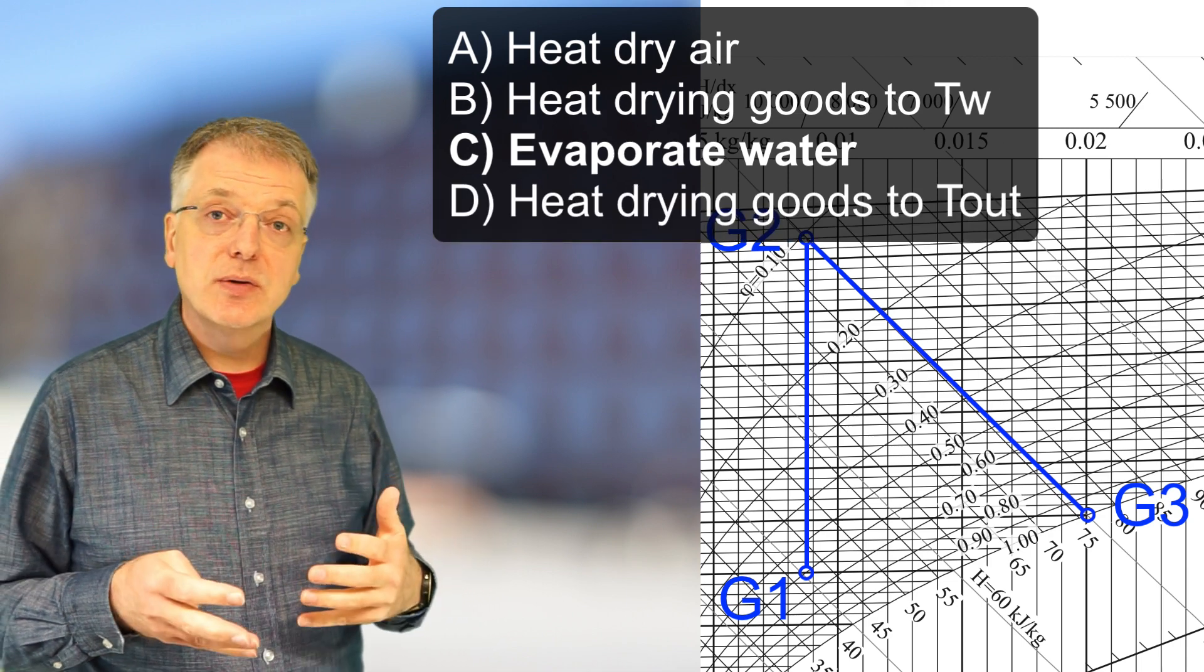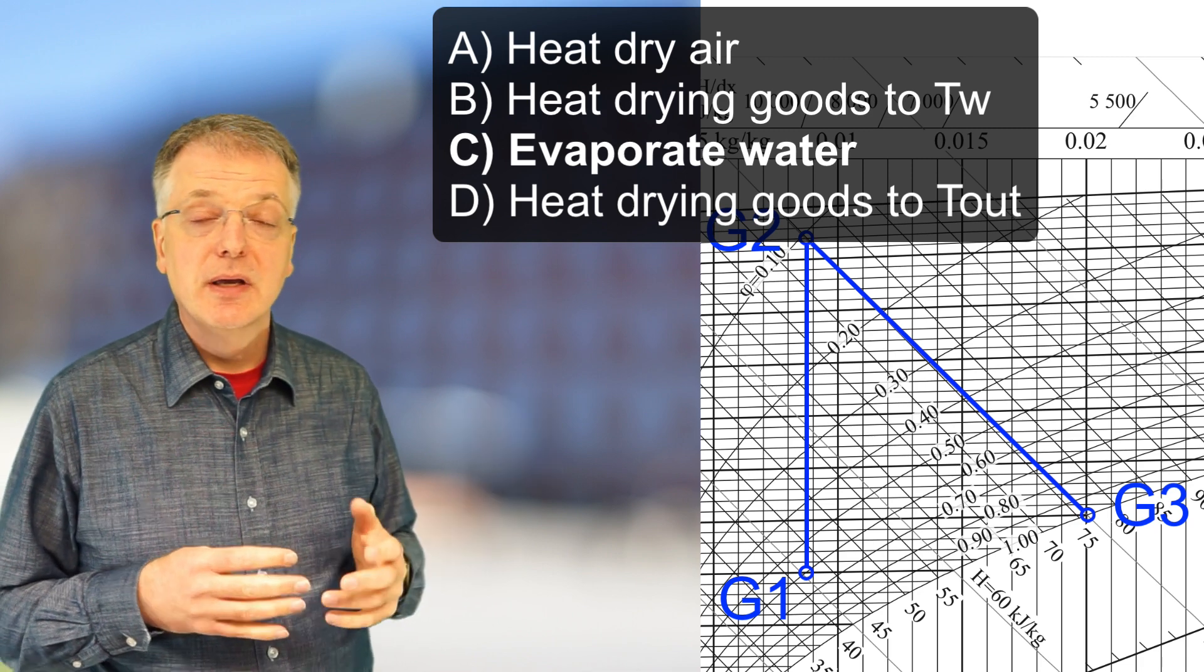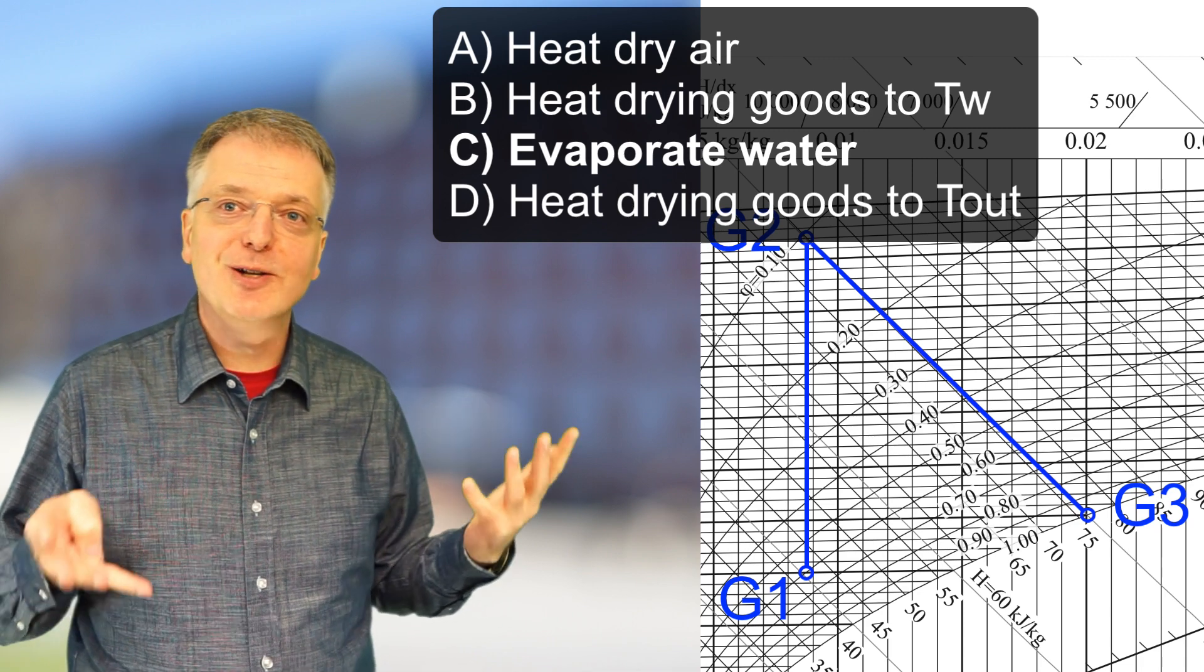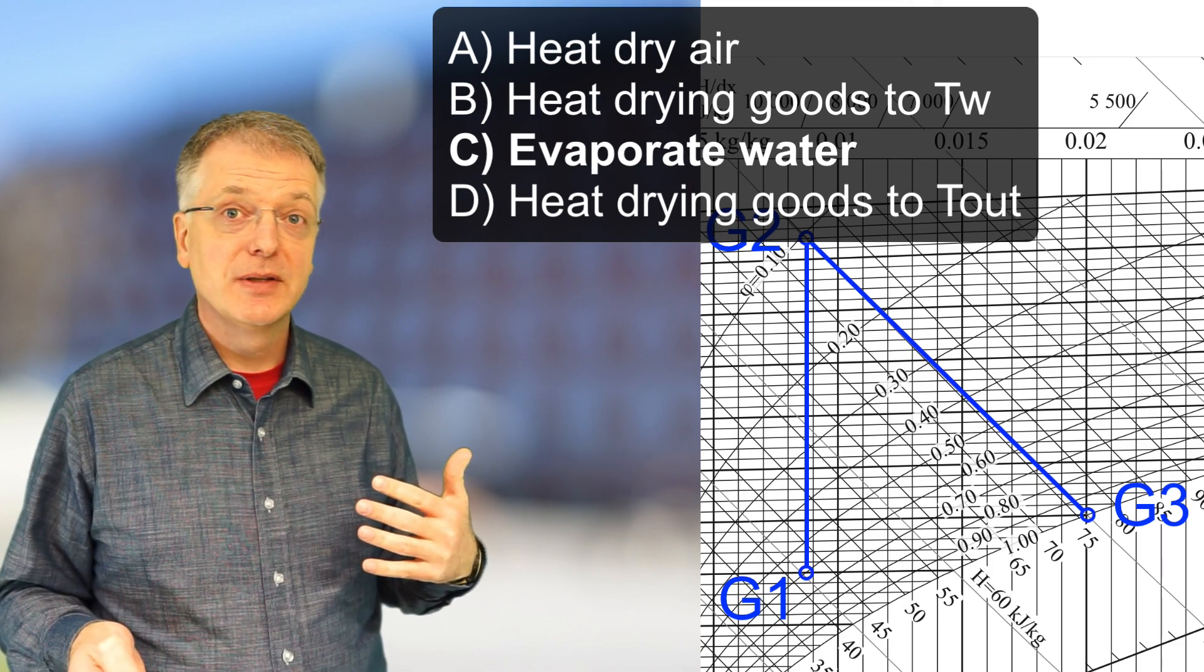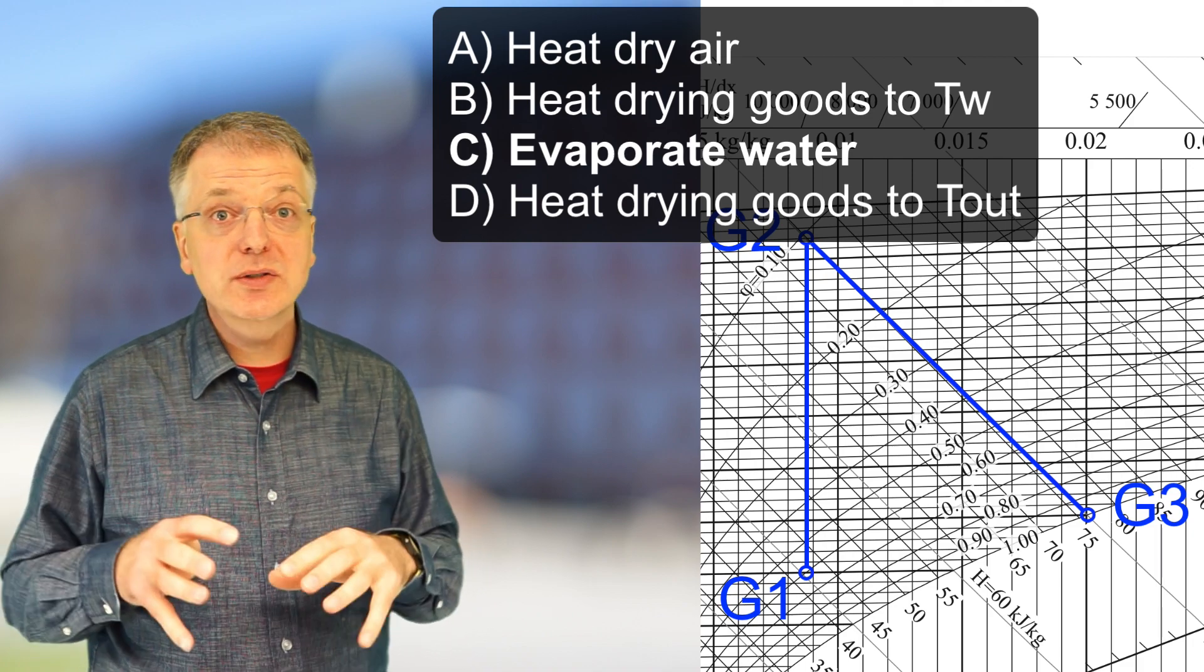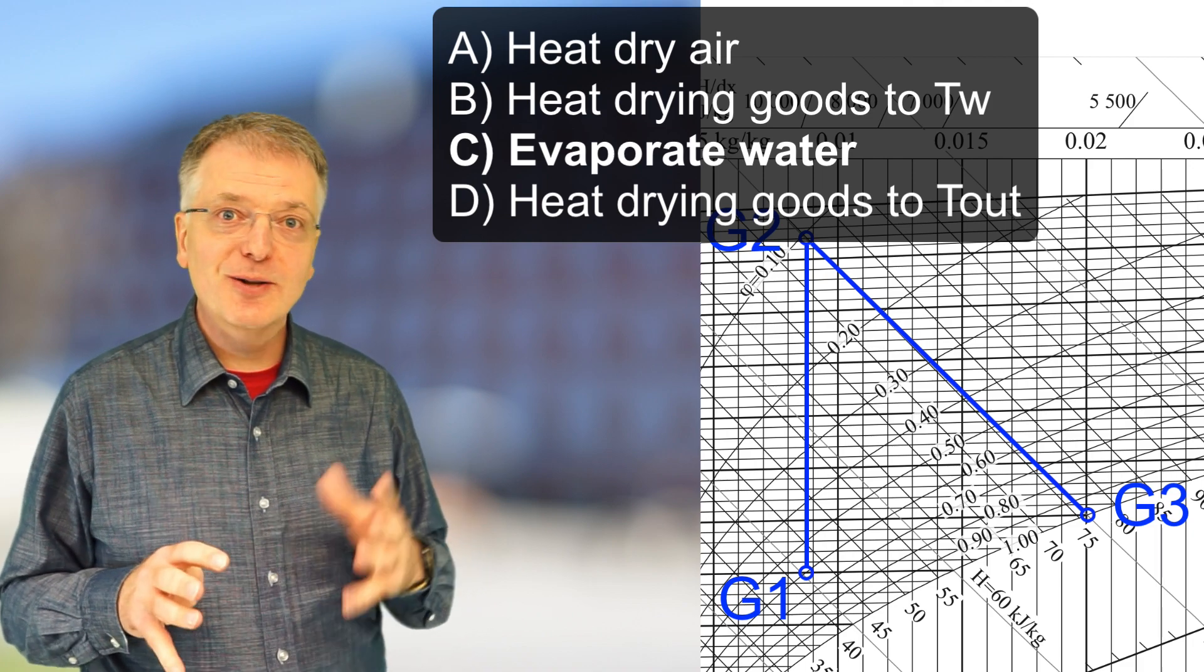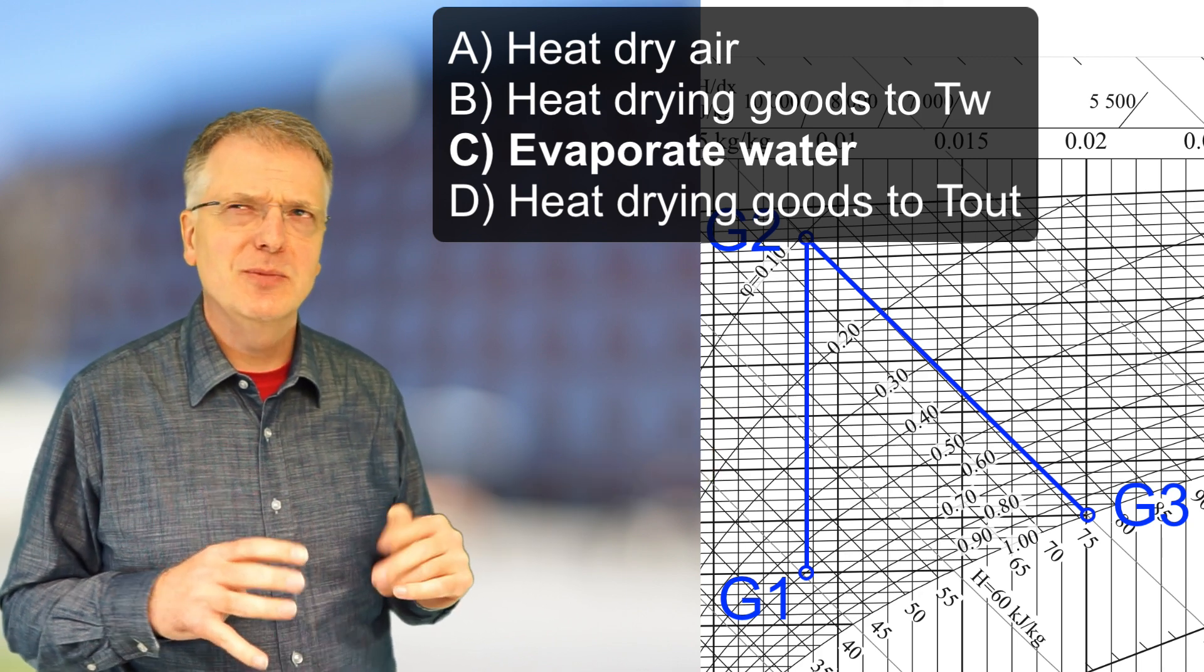D, energy is needed to heat the goods to its outgoing temperature. In our calculation, we have actually assumed that the outgoing temperature of the drying goods is the wet temperature of the air. In most of the calculations we do in our course, we essentially assume that the drying goods is surface wet even after the drying process, which is a bit silly.